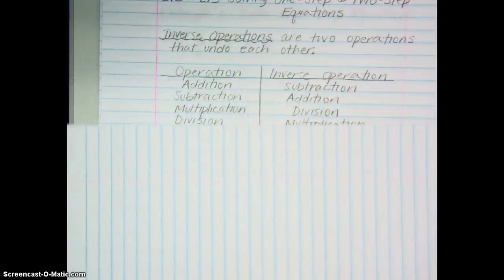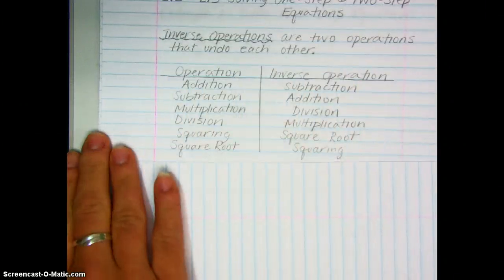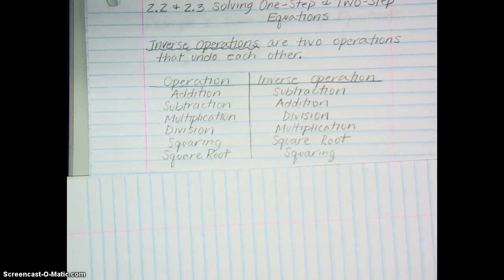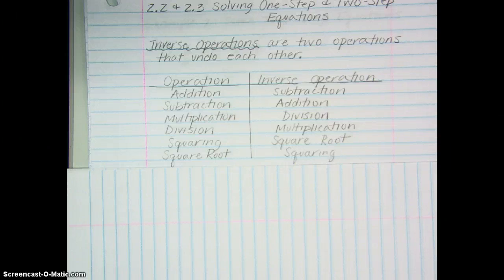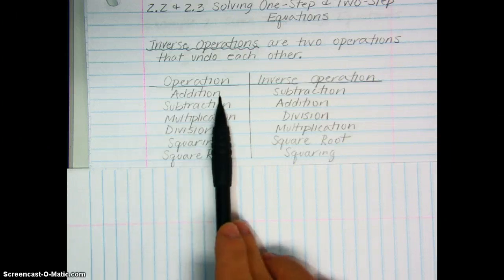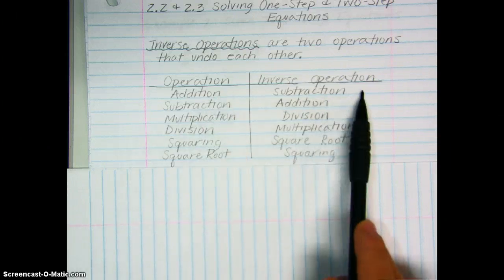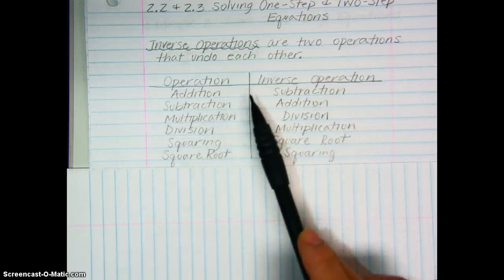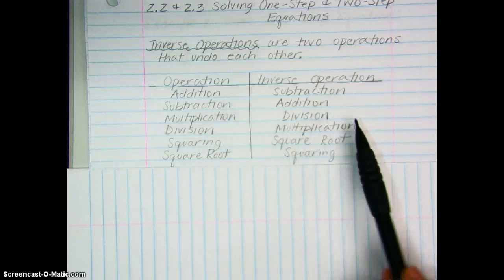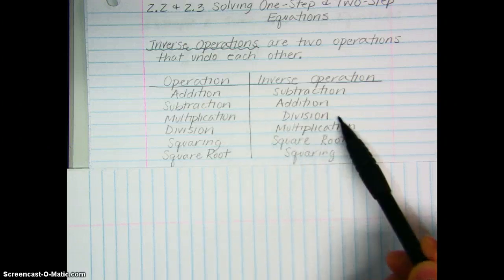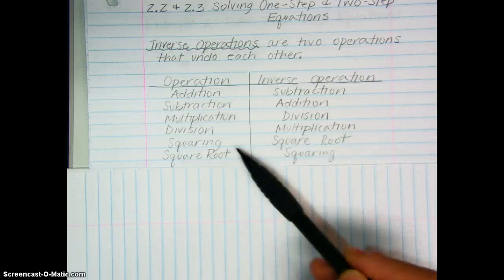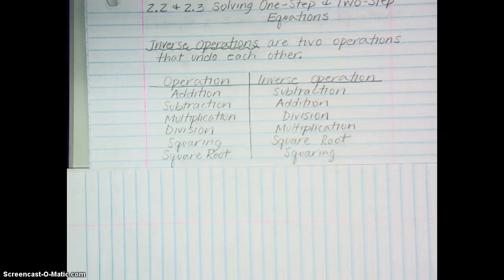Considering some operations we might be familiar with, we can look at the operations that are inverse to them. To undo addition, you do subtraction. To undo subtraction, you do addition. To undo multiplication, you do division. The opposite of division is multiplication. And then squaring and square rooting are opposites of each other as well.